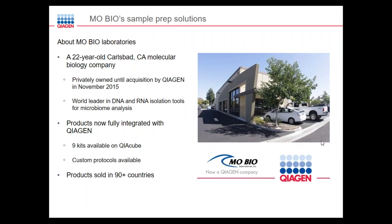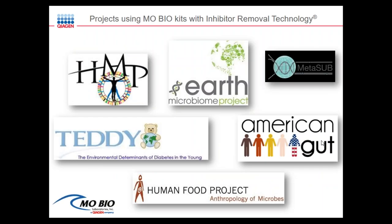Both projects used products from MOBIO Laboratories, located in Southern California and acquired by Kaigen in November 2015. MOBIO was a world leader in DNA and RNA isolation tools for microbiome analysis. All of its products are now fully integrated with Kaigen, and we have nine kits with a total of 20 different protocols available on the KaigenCube today, with custom protocols also available upon request. These kits have been used in projects including the Human Microbiome Project, Earth Microbiome Project, MetaSUB, the American Gut Project, TEDDY (Environmental Determinants of Diabetes in the Young), and the Human Food Project.